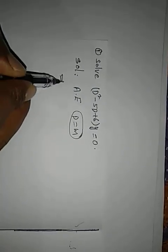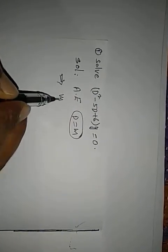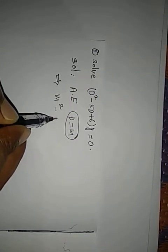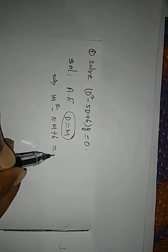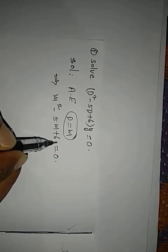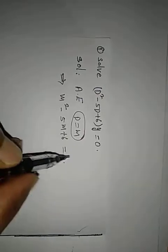So, this equation in terms of m: m square minus 5 into m plus 6 is equal to 0. Need not to write y into y. Okay. The next,